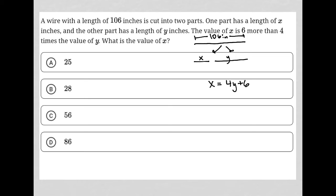If I know that X is really - I'll use a different color - this X piece here is really 4Y plus 6, then that tells me that this 4Y plus 6 piece plus this piece that has a value of Y still has to equal the total, which was 106. So there's my equation.